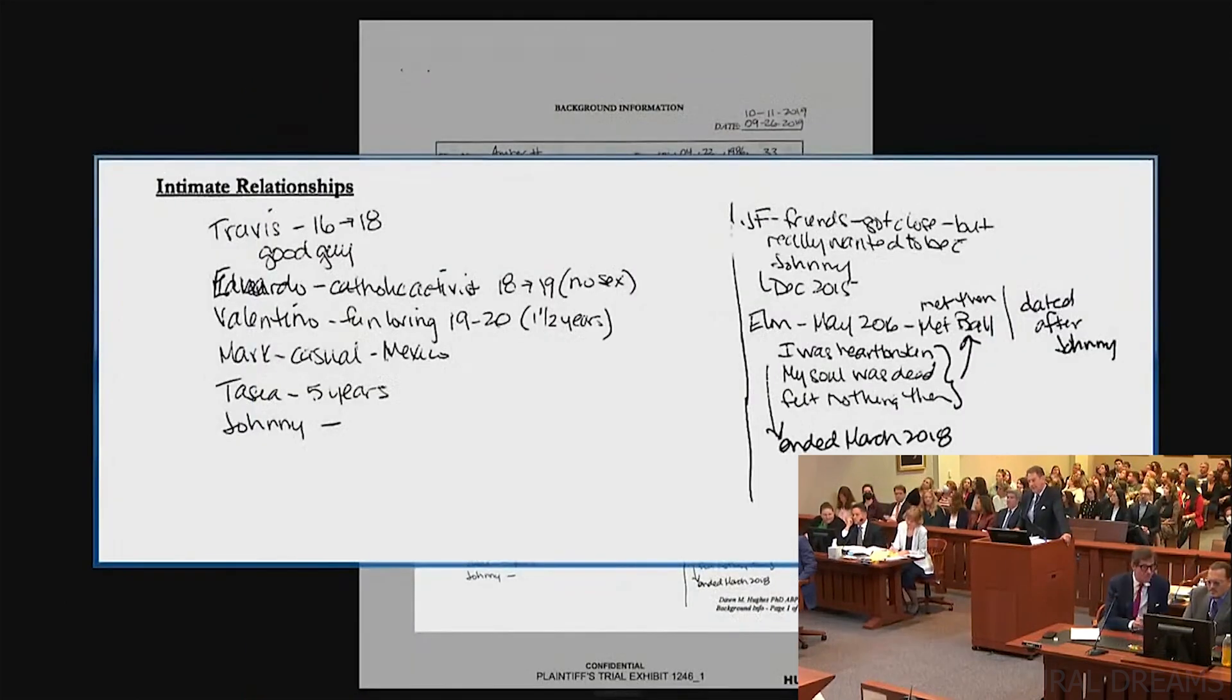Correct. And one of the notes here on the right, it says JF, that's James Franco, right? Correct. Got close but really wanted to be with Johnny. Well, it says JF Friends. They were friends. All right. Said friends, but you put them under intimate relationship.